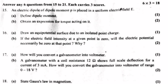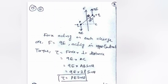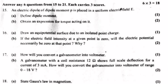Question 15: An electric dipole of dipole moment P is placed in a uniform electric field E. A. Define dipole moment. B. Obtain an expression for torque acting on it. Answer A: Dipole moment is the product of the magnitude of charge and the distance of separation: P equals q × 2l. Answer B: Force acting on each charge F equals qE, acting in opposite directions. Torque T equals force times perpendicular distance equals qE × AB sinθ equals qE × 2l sinθ, so T equals PE sinθ.